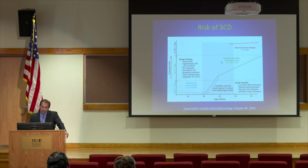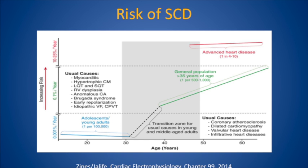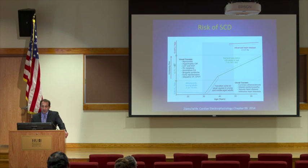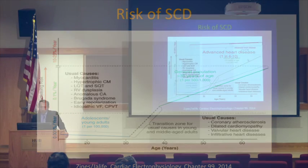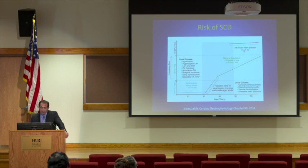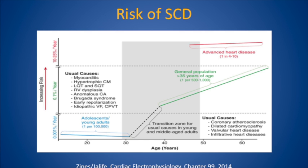Then we get to the general population, ages 35 or older, where the risk of sudden cardiac death is 1 per 500 to 1 in 1,000, or about 0.1% per year. Usual causes include coronary atherosclerosis, dilated cardiomyopathy, valvular heart disease, and infiltrative heart diseases. Patients who have advanced heart disease are at much higher risk — about 1 in 4 to 1 in 10, or 10 to 25% per year.